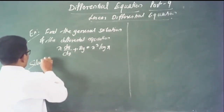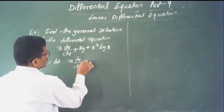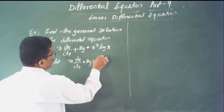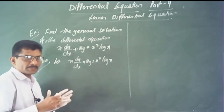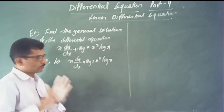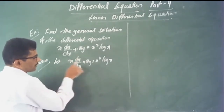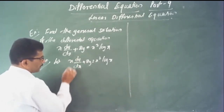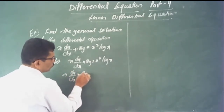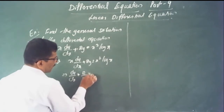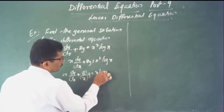The given differential equation is x times dy/dx plus 2y equals x squared times log x. First, rewrite in the form dy/dx plus p times y equals q, meaning make the coefficient of dy/dx equal to unity. Dividing each term by x, we get dy/dx plus 2/x times y equals x times log x.